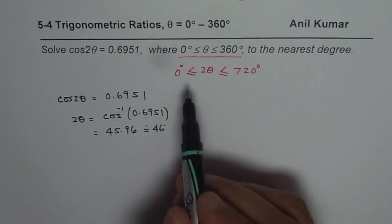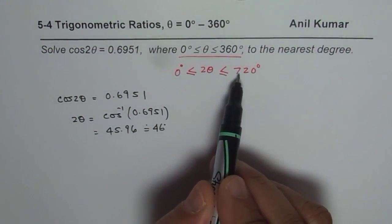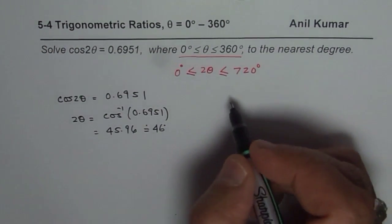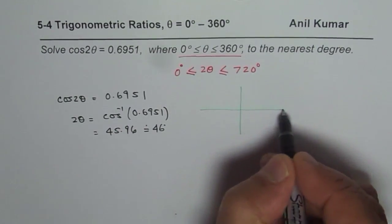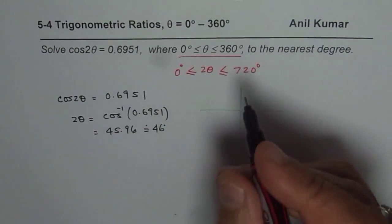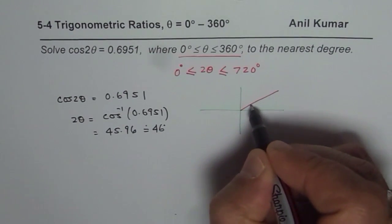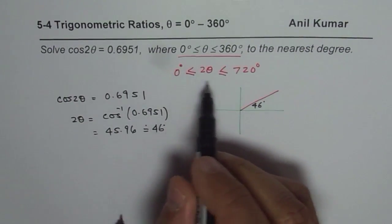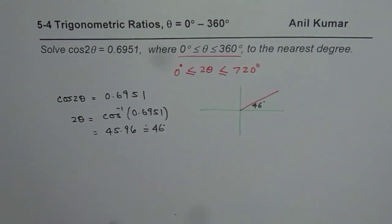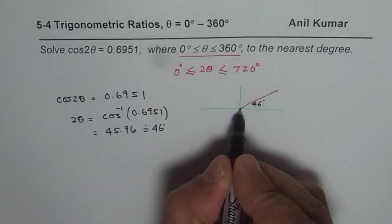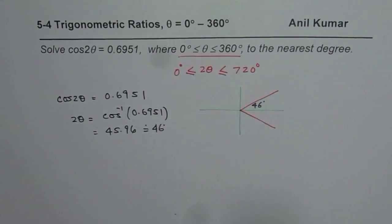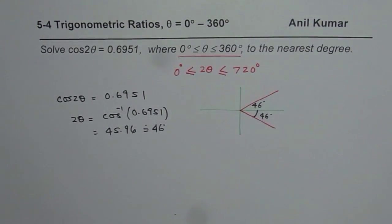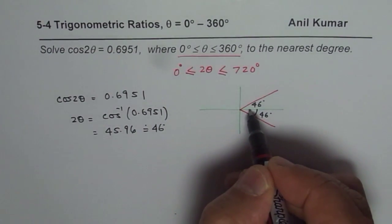Now we know that 2θ should be between 0 to 720 degrees. How to get all possible solutions? That is a very critical part. To get all possible solutions, we got the first one which is 2θ equals this angle, 46 degrees. Now cos is positive in two quadrants: quadrant 1 and also quadrant 4. That means the related acute angle should be 46 here also. So these are two possible solutions and these two solutions are in 0 to 360.